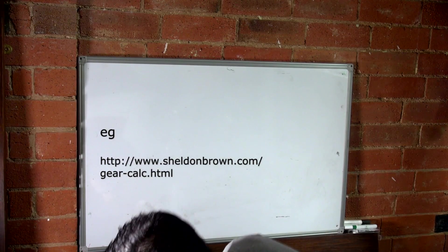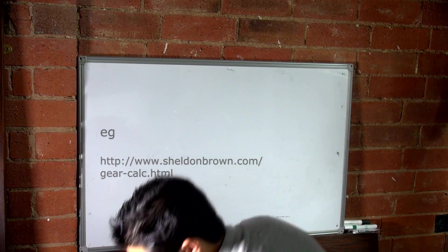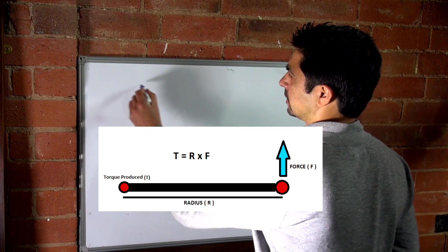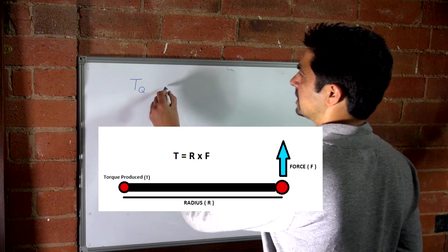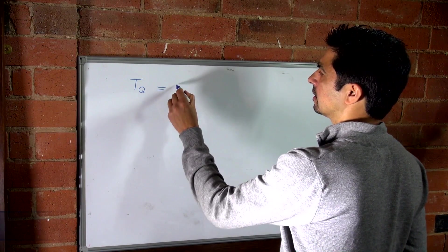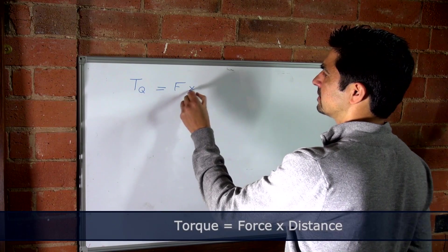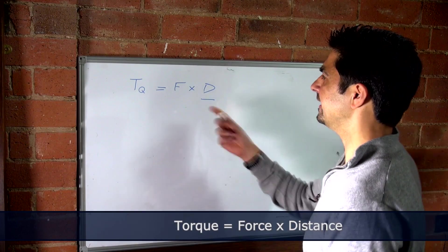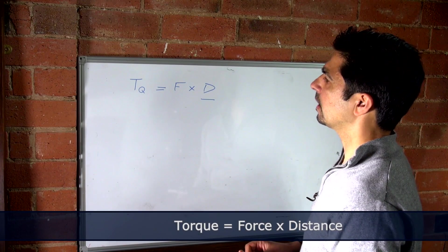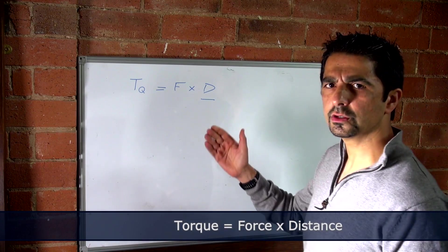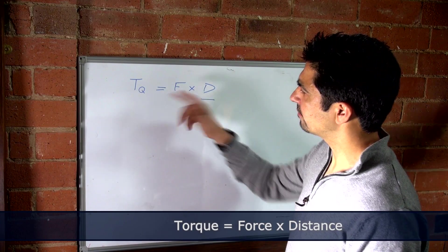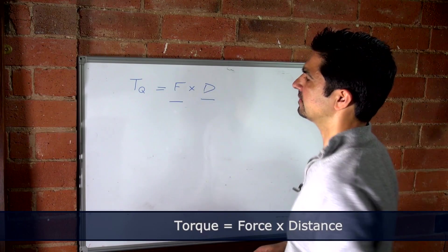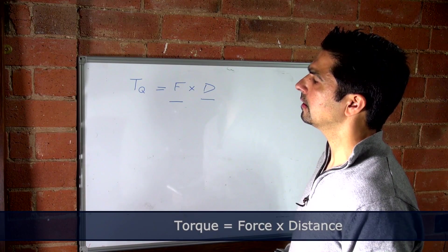Now, if you think about the relationship between the force on the pedal and the torque on the hub, the torque is equal to the force times the distance, where the distance is effectively a lever. So, a long crank is going to enable you to have more torque if the force stays fixed.